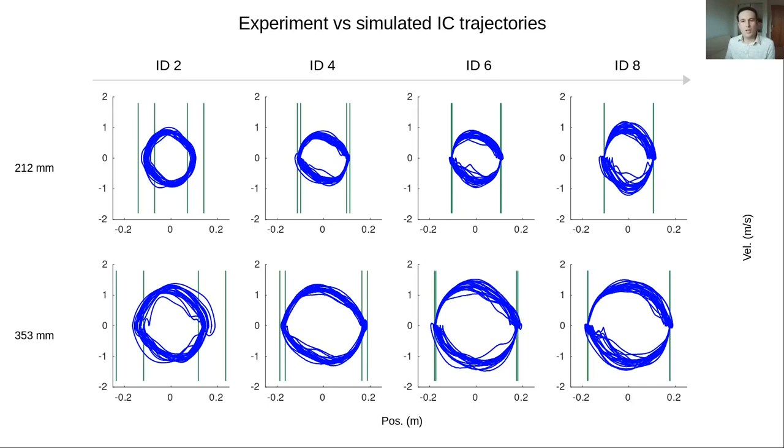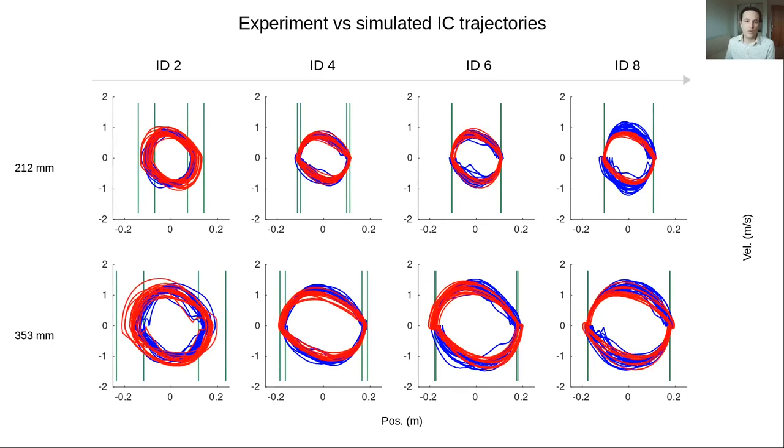If we overlap the simulated intermittent control responses for each condition, shown in red, we see that the overall variability is better captured when intermittent control is used, getting a wider range of responses, even for the most difficult conditions.